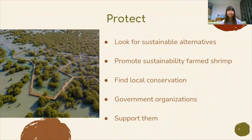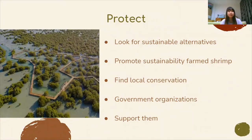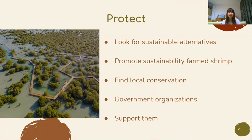There are many ways you can help protect this ecosystem. First, plant more mangroves. Second, look for sustainable alternatives to eating farm shrimp from mangrove areas. And lastly, find a local conservation or government organization in your area that is working to conserve mangrove forests and support them. Keeping mangroves healthy is critical to human well-being, as the mangrove ecosystem supports a wide diversity of people.